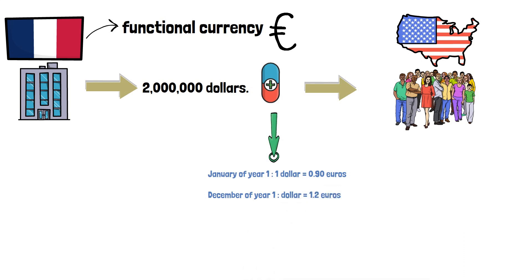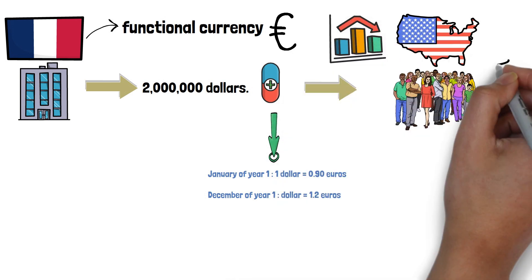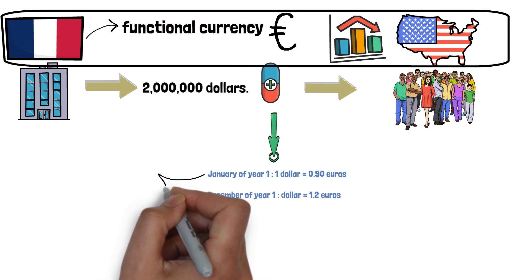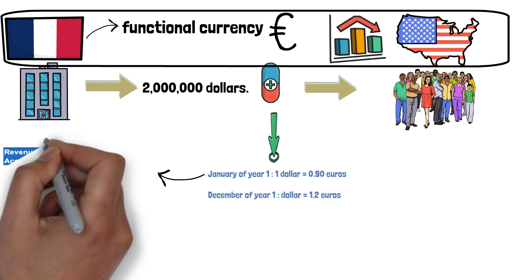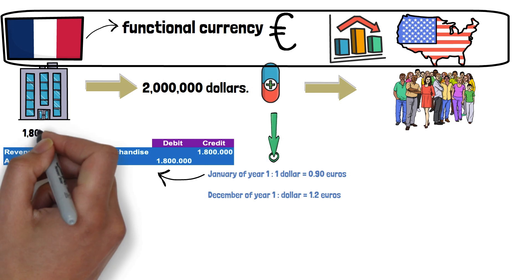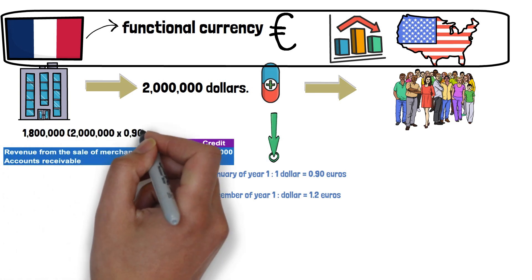The sale is paid for in December of year 1. At initial recognition, an entity that engages in foreign currency transactions is exposed to changes in the value of the foreign currency relative to the functional currency. Therefore, a company will translate a foreign currency item into its functional currency. The first accounting record will be an income in euros for the value of 1,800,000.